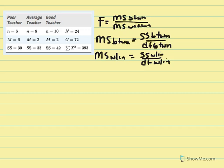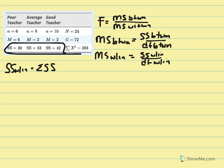The calculation for MS within is easiest especially when we're given SS, so I'll calculate that first. SS within equals the sum of our sum of squared deviations across conditions. We're given all our SS values, so we take 30 plus 33 plus 42, and that summation equals 105.